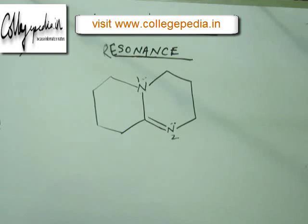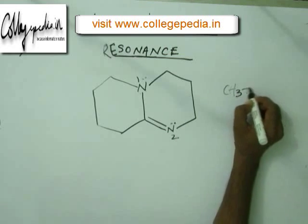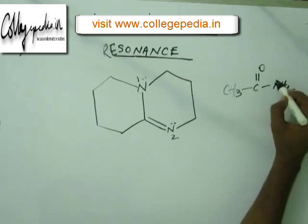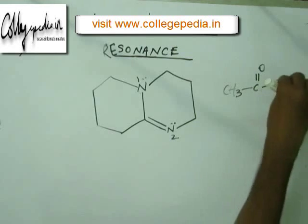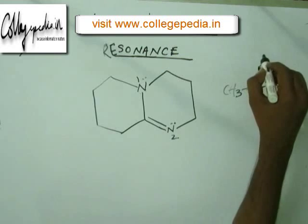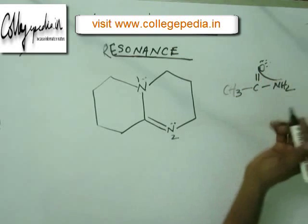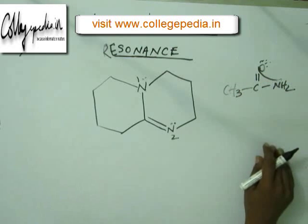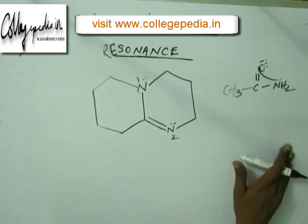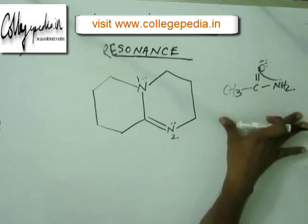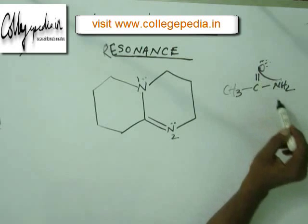In the last problem of the previous lecture we talked about basicity, the basic site, and amide. In that amide we talked about which site is the donor — oxygen or nitrogen. We saw that the lone pair of nitrogen does not remain in the orbital of nitrogen; rather it goes for resonance and gets accumulated on oxygen. So if we add H+ into the system having amide, that H+ will approach oxygen and not nitrogen.